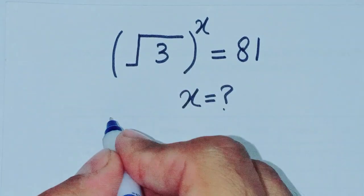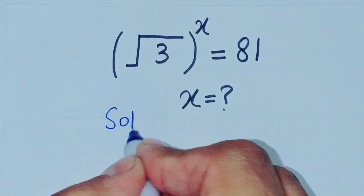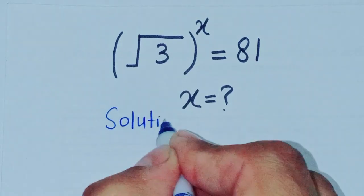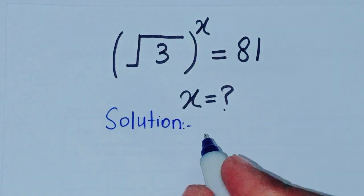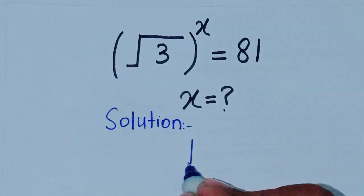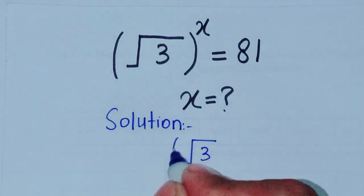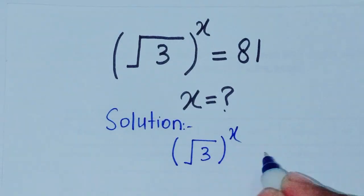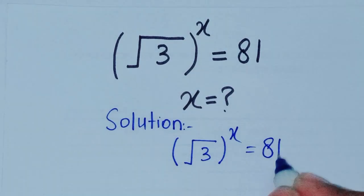So let's start the solution. The solution is (√3)^x = 81.